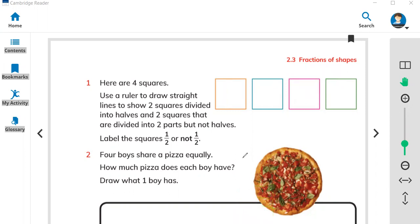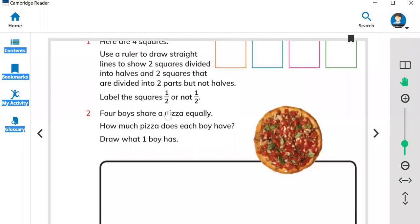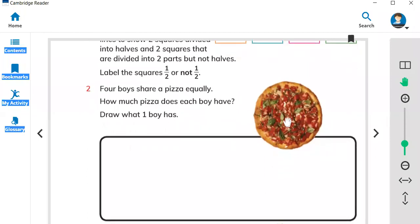Let's move on to the next question, question number two. Here is a pizza. You have to cut this pizza into four. Four boys share a pizza equally. How much pizza does each boy have? Draw what one boy has.